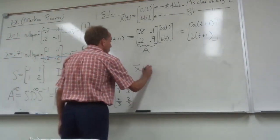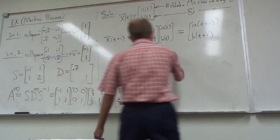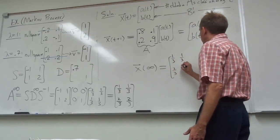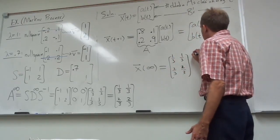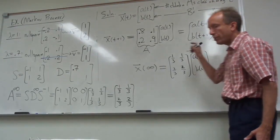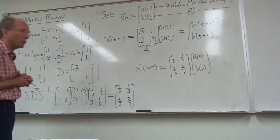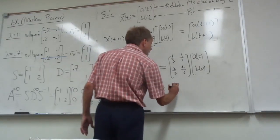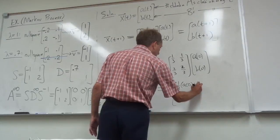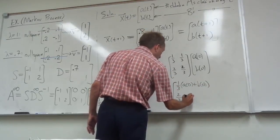So what is the distribution of students at time infinity? Well, it's this power of A, this infinite power of A. I'll write it down here: 1 third, 1 third, 2 thirds, 2 thirds, times whatever the initial rosters look like. Let's say we start on day zero with an initial roster of A zero and B zero. If you multiply this out, what you're going to get is 1 third of A naught plus B naught and 2 thirds of A naught plus B naught.